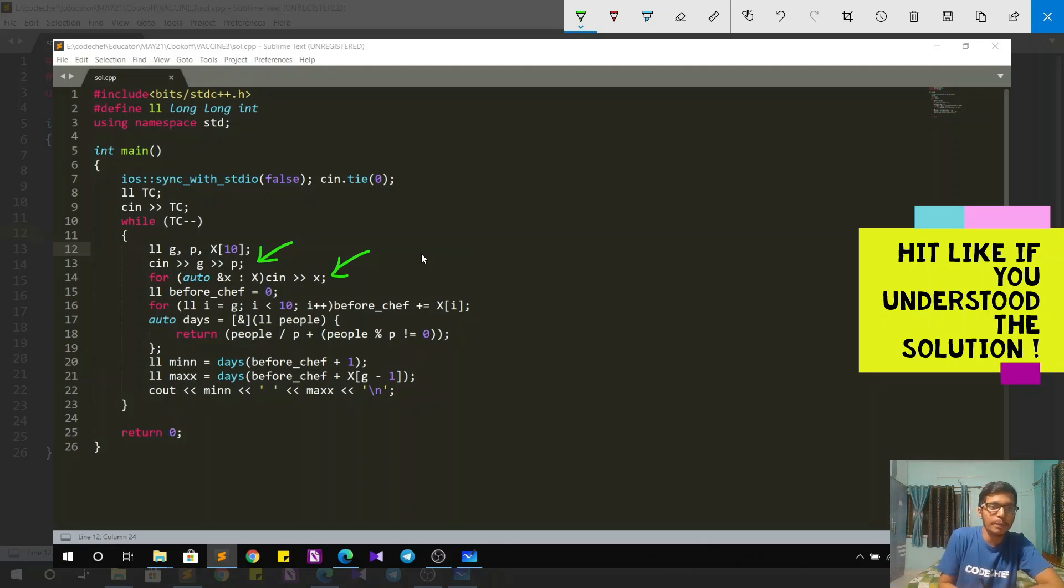Then I calculate how many people are going to get vaccinated before Chef. So that is done by adding the number of people from group number G plus 1 to 10. But because we are following zero based indexing, it will start from G and go up to less than 10. Now, I have this function days over here. Let's see in a bit what it does.